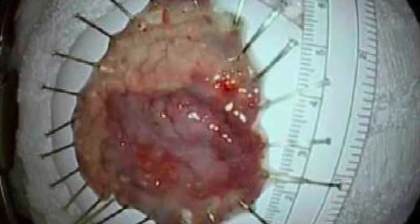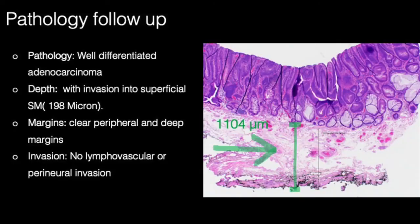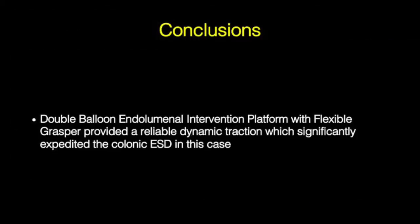The procedure was performed in 70 minutes. Pathology showed well-differentiated adenocarcinoma with depth of invasion into superficial submucosa of 198 µm. Peripheral and deep margins were clear; no lymphovascular or perineural invasion was seen, so this was a curative resection. The depth of submucosa dissected in this case was 1104 µm. In conclusion, the double-balloon endoluminal interventional platform with flexible grasper provided reliable dynamic traction which significantly expedited colonic ESD in this case.